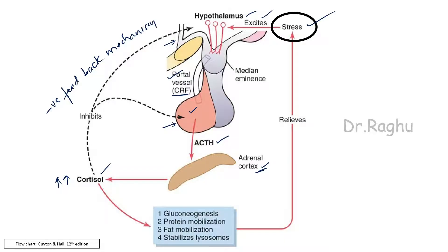Whenever cortisol secretion increases, it has actions that relieve the stress, and hence the excitement over the hypothalamus is going to reduce. The HPA axis is the most important concept to understand in regulation, and stress is the most important regulator of cortisol secretion.